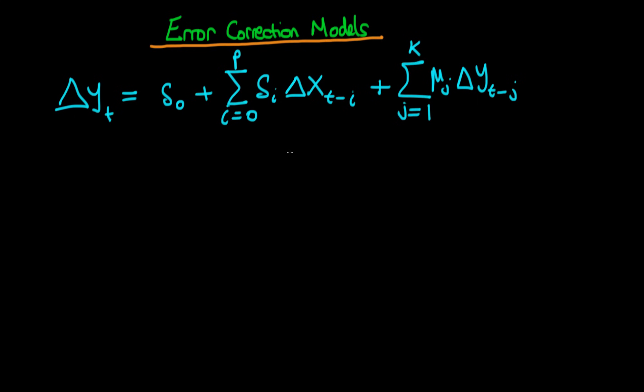But then finally we still need to have the same sort of term which we had in the original error correction model, which is this long-run bit, because all the terms thus far have been short-run stuff. So we have minus lambda times y t minus 1 minus alpha minus beta times x t minus 1, and then finally we have some sort of error et.